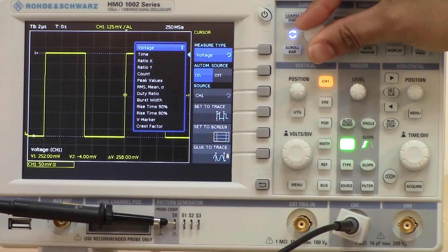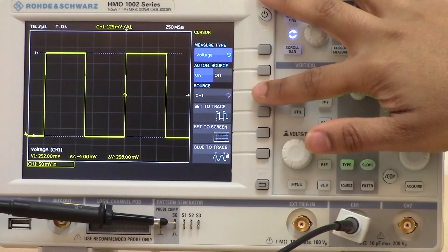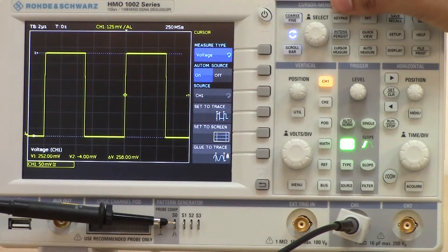For example, if we choose a voltage cursor, a user can then choose what particular source to look at as well.